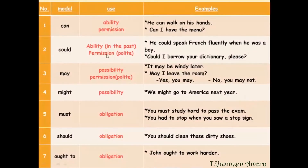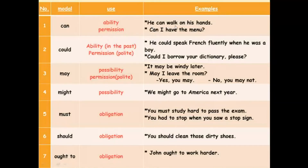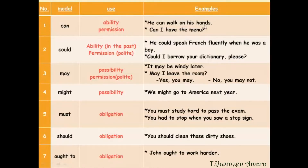This is a table that shows the modal verbs and their usage. Number one: can. We use 'can' for ability or permission. Look at the sentences: 'He can walk on his hands' — that's ability. 'Can I have a menu?' — that's permission.